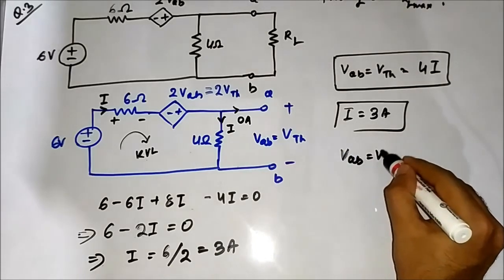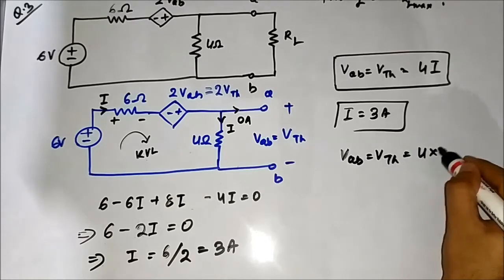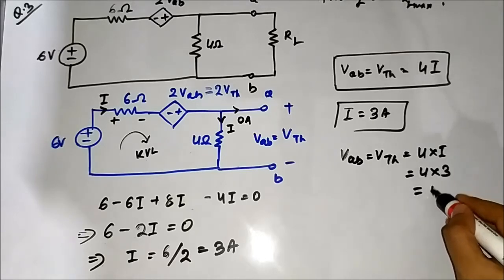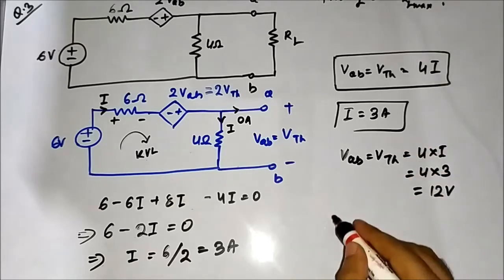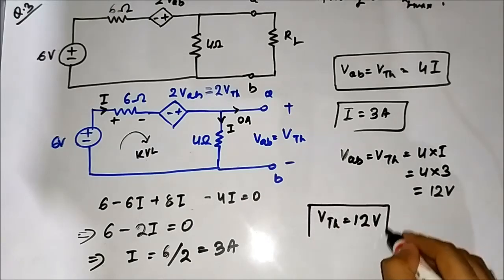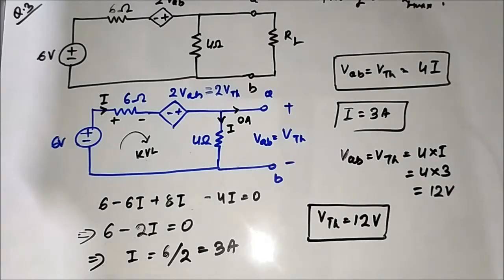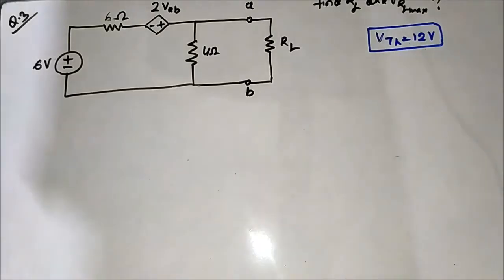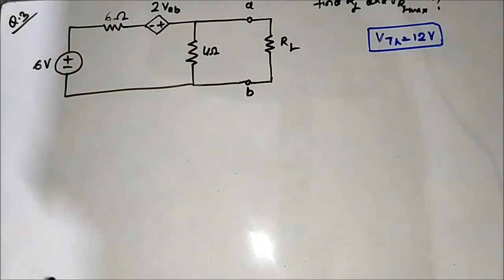VAB equals VTH equals 4 times I, which equals 4 times 3, which equals 12 volts. VTH is equal to 12 volts. Now we have to find RTH, the Thevenin resistance.